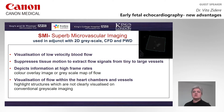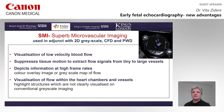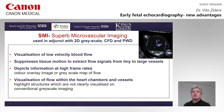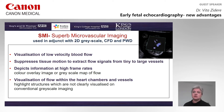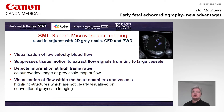SMI allows us to see blood pool within chambers and vessels, including those with low-velocity blood flow. It highlights structures which are not clearly visualized on conventional grayscale.